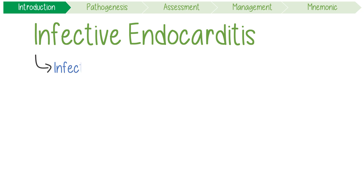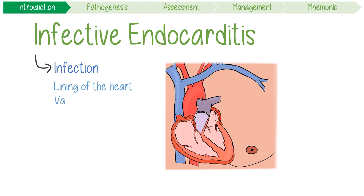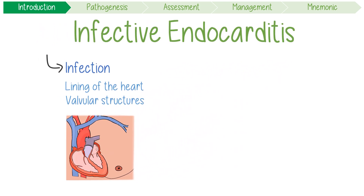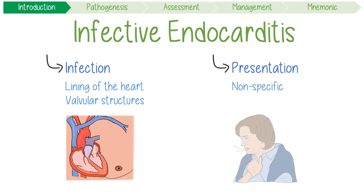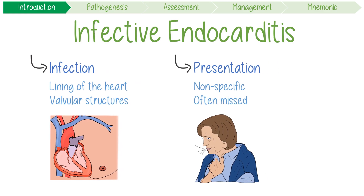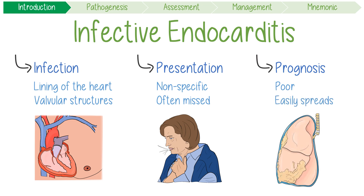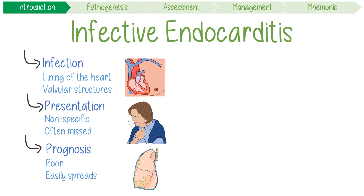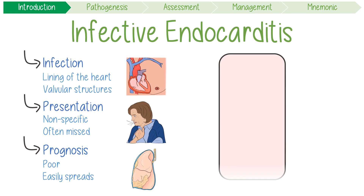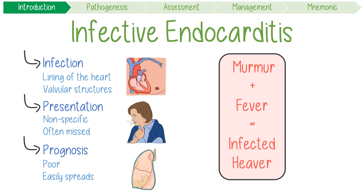Infective endocarditis is an infection of the internal lining of the heart, mostly affecting its valvular structures. This disease is high yield because its presentation is non-specific, meaning it's often missed. Moreover, its prognosis is poor because infection easily spreads to other organs or parts of the heart. To boil it down to basics, remember this rhyme: a new murmur plus fever is an infected heaver until proven otherwise.